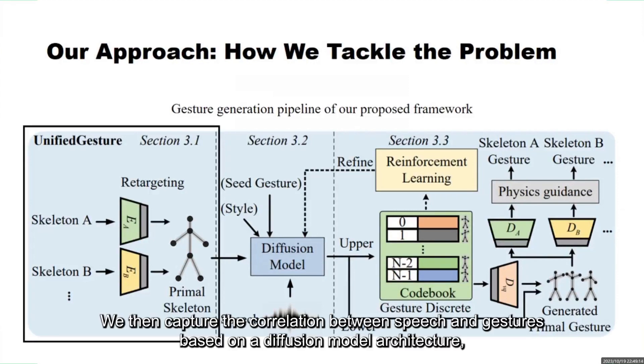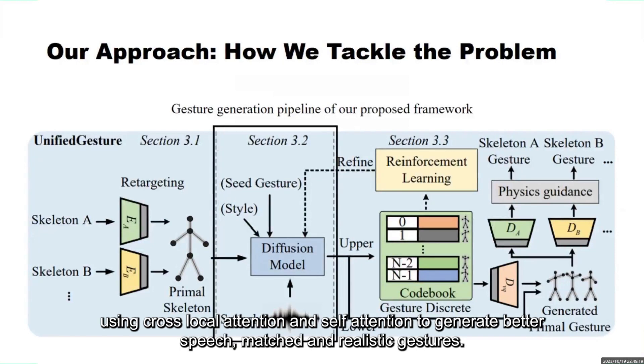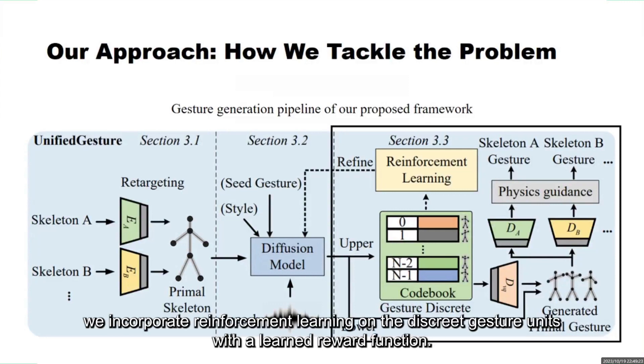We then capture the correlation between speech and gestures based on diffusion model architecture, using cross-local attention and self-attention to generate better speech-matched and realistic gestures. To achieve aligned speech and gesture and increase diversity, we incorporate reinforcement learning on discrete gesture units with a learned reward function.